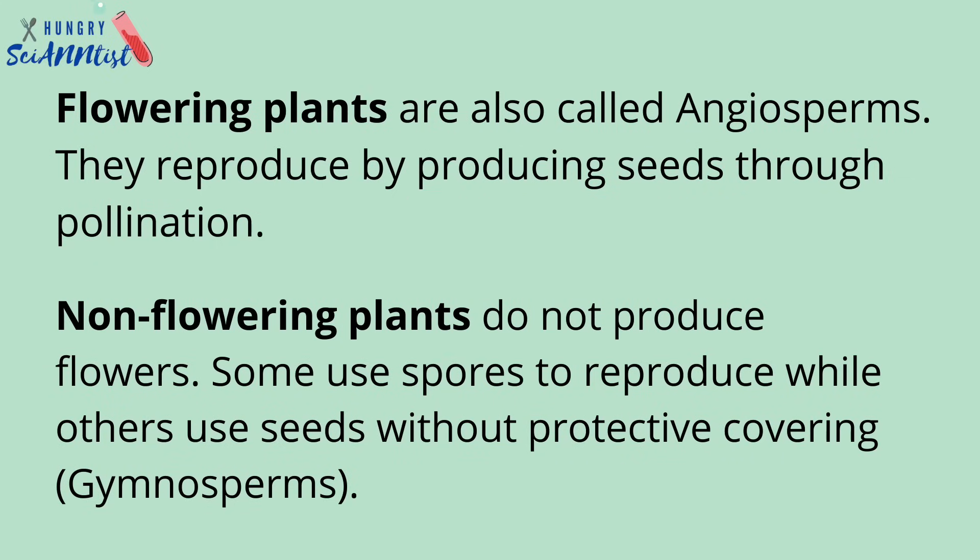Flowering Plants are also called Angiosperms. They reproduce by producing seeds through pollination. Non-flowering Plants do not produce flowers. Some use spores to reproduce, while others use seeds without a protective covering. They are called Gymnosperms.